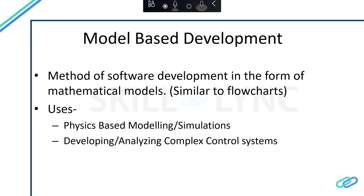Model-based development is also needed to develop and analyze complex control systems, because it is not always possible in the development phase to test control systems on real objects or real systems. It is also easier to find an optimum control system when we have the plant function or plant model. That's why model-based development is important when we want a control system for a particular plant or system.